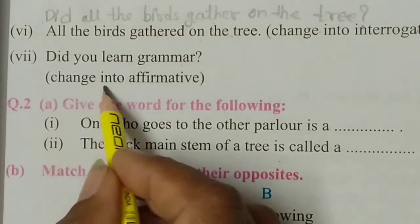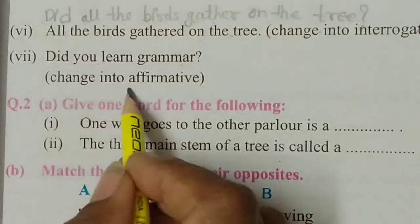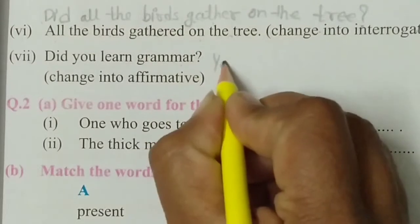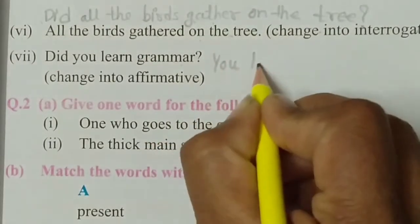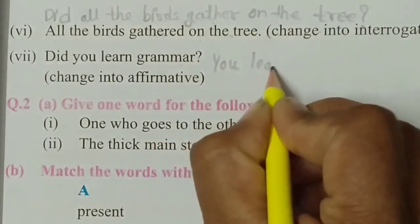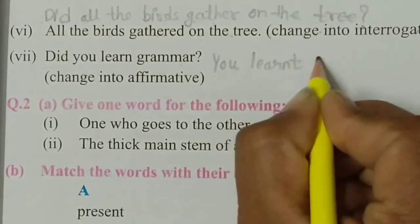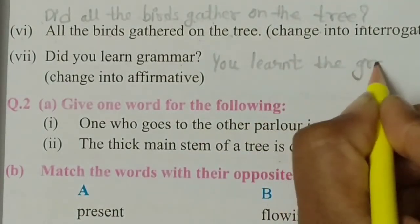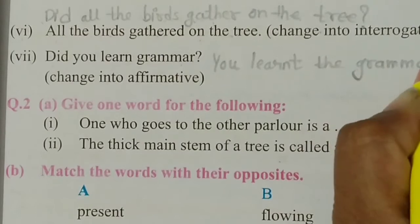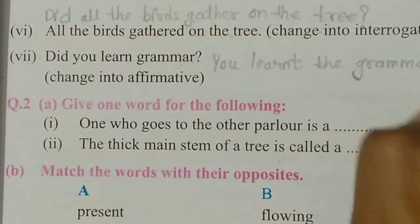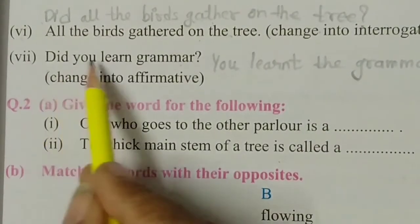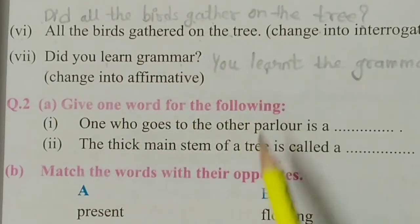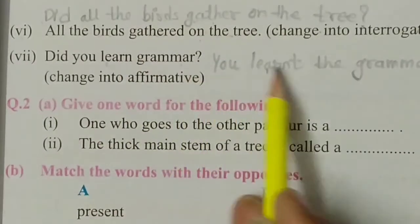Next: did you learn grammar? — change into affirmative. The affirmative sentence becomes: you learned the grammar. When we remove 'did', the verb 'learn' changes to its second form — learned.